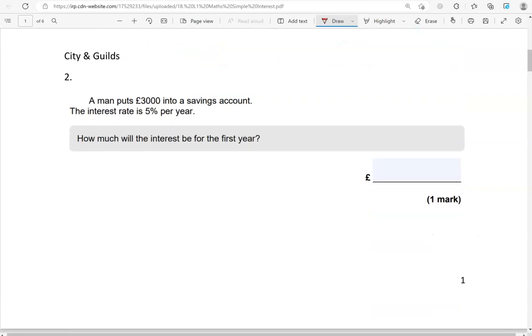A man puts 3,000 pounds into a savings account. The interest rate is 5% per year. How much will the interest be for the first year? We'll again use the same method, as we can't use a calculator. So the whole amount is 3,000 pounds. We're working out 10% and then 5%.